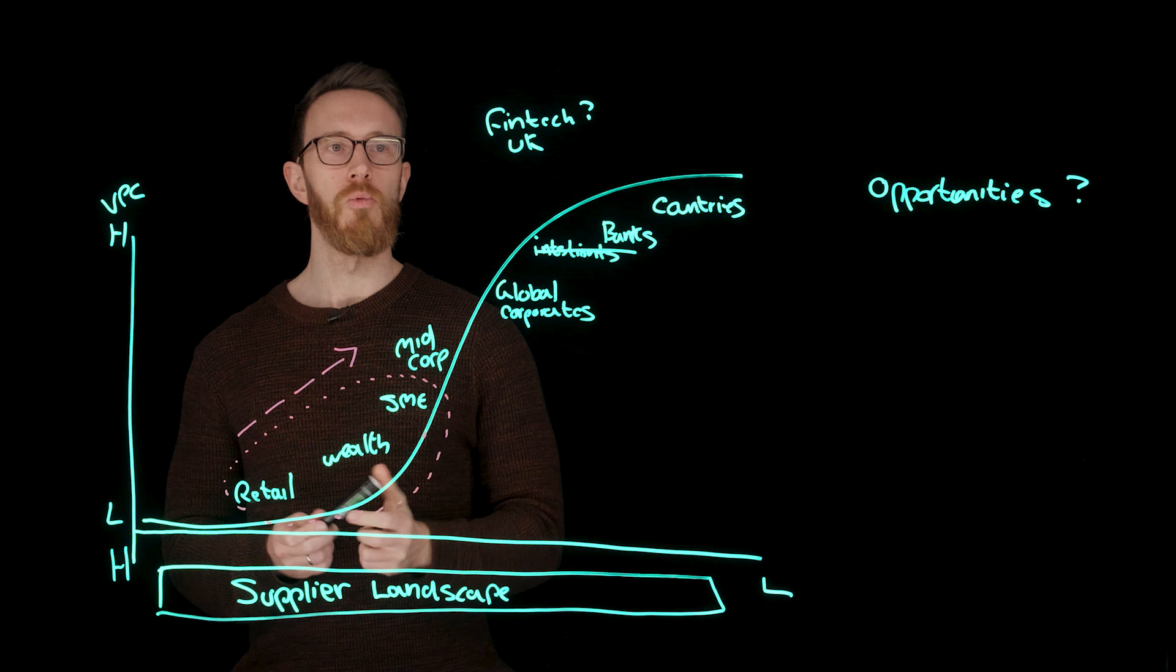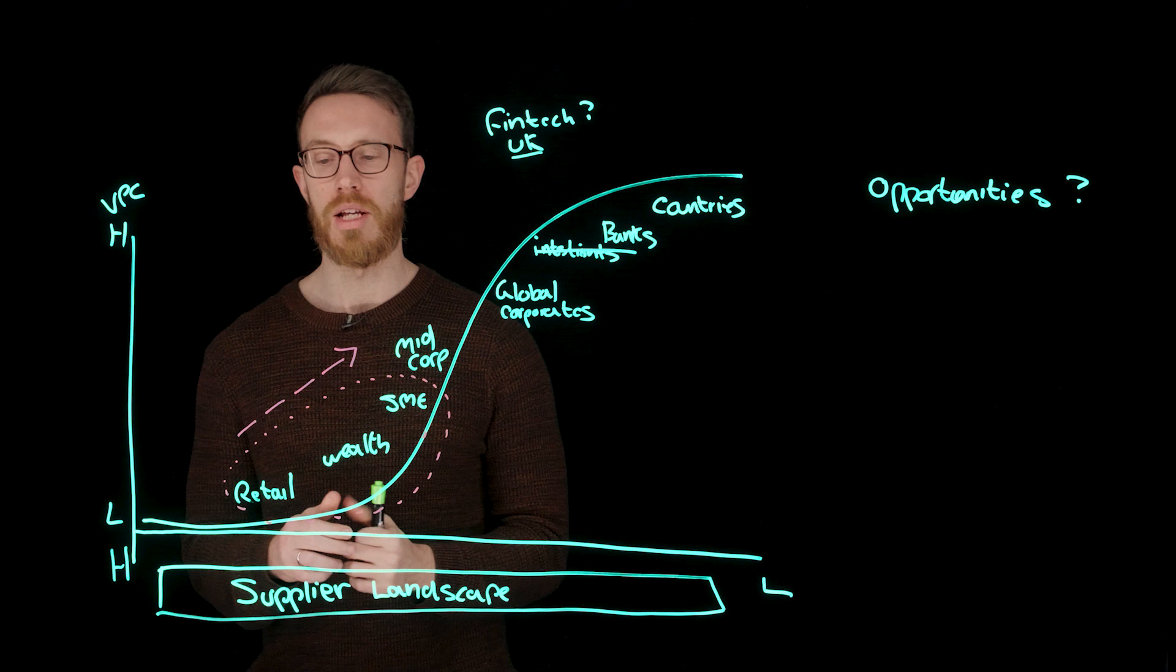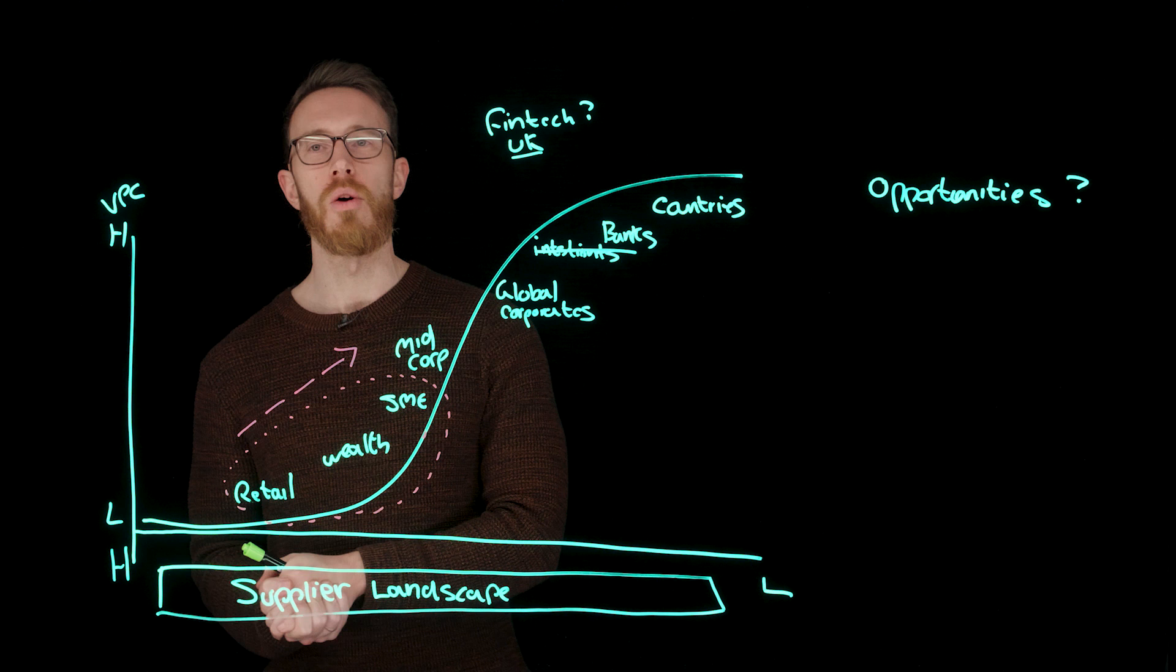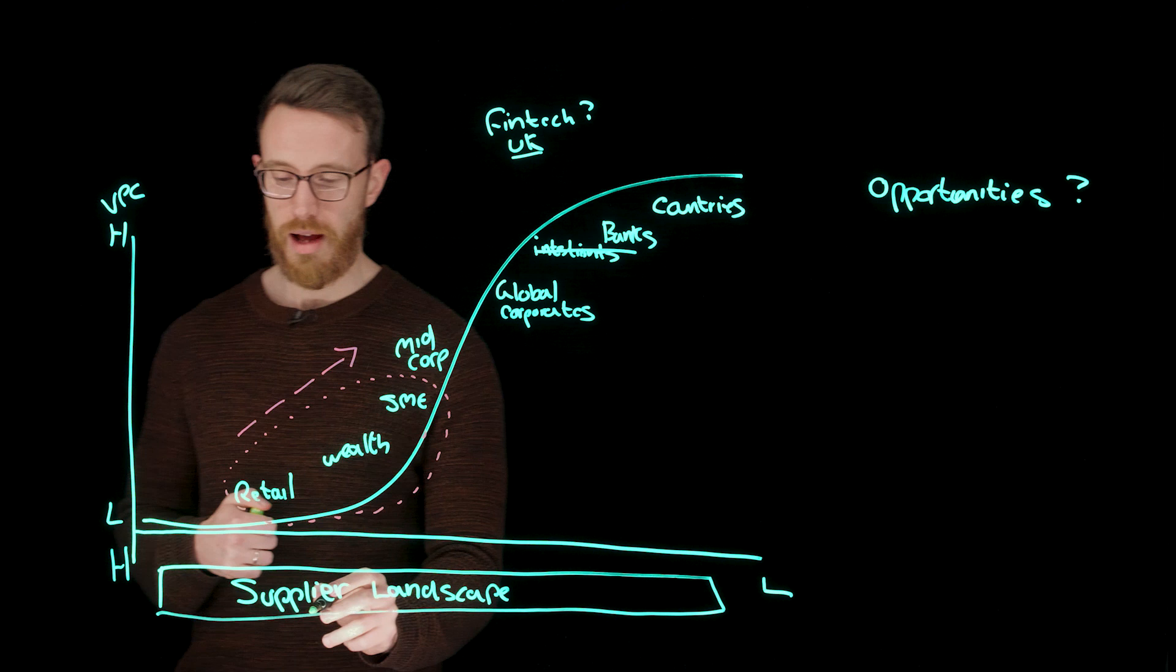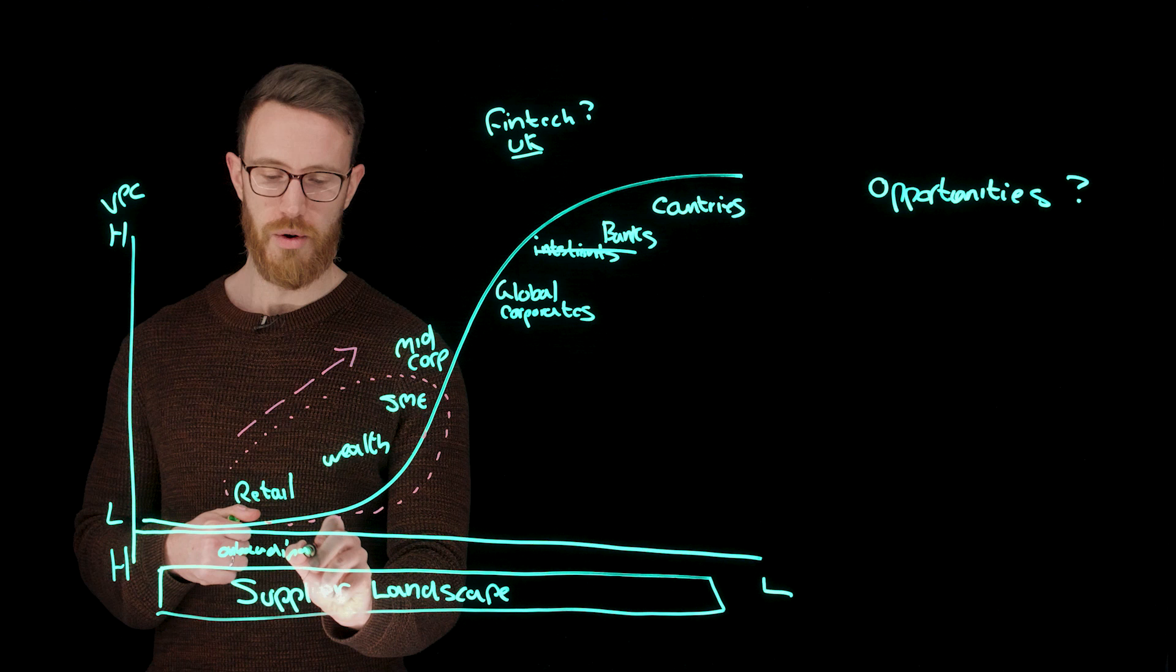The opportunities then start to really appear as you think about the market. In the United Kingdom, is there space to do another challenger bank entrant? Quite possibly. You'd have to think very hard about what your differentiator is, but you'd also have to really understand the supplier landscape. And actually, this supplier landscape isn't as simple as it first seems. There's actually a whole series of suppliers that do things like onboarding.